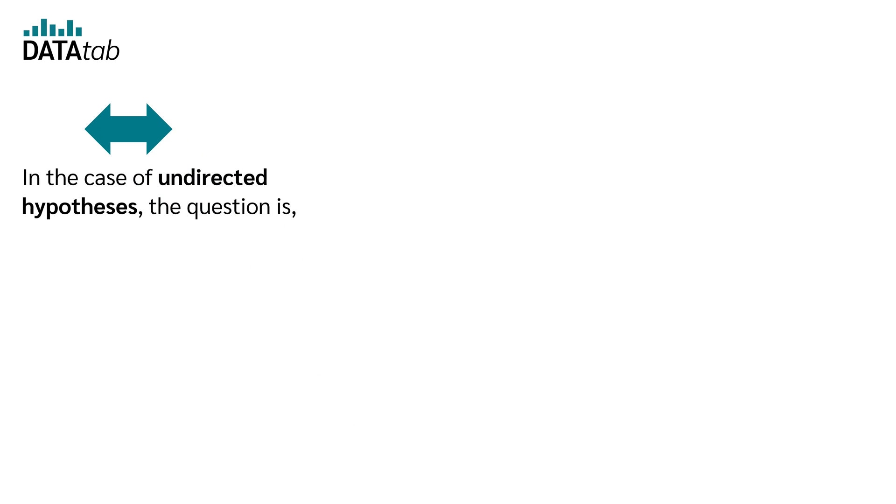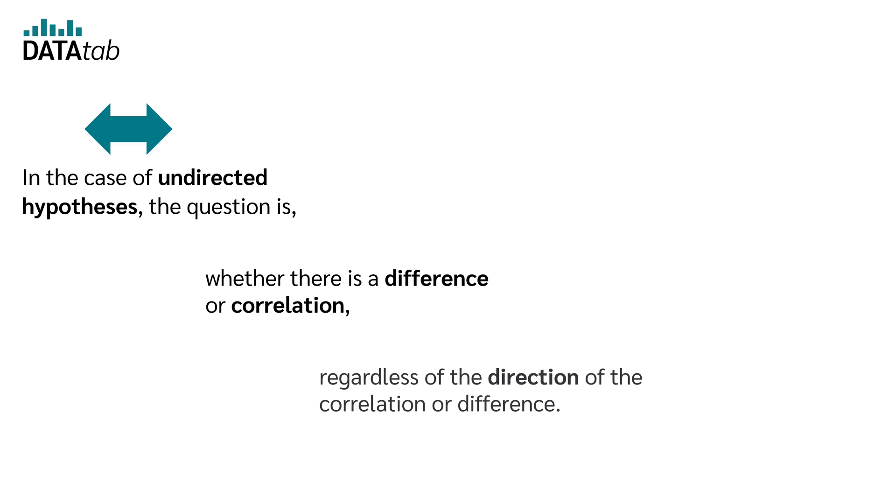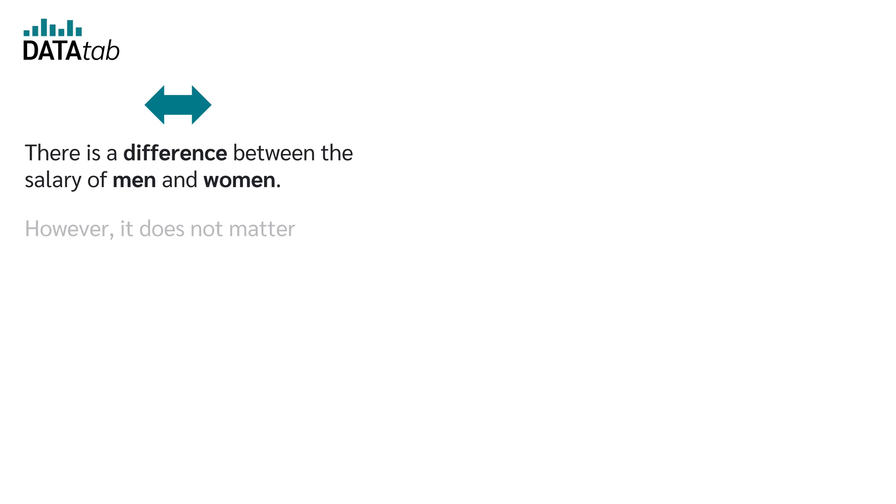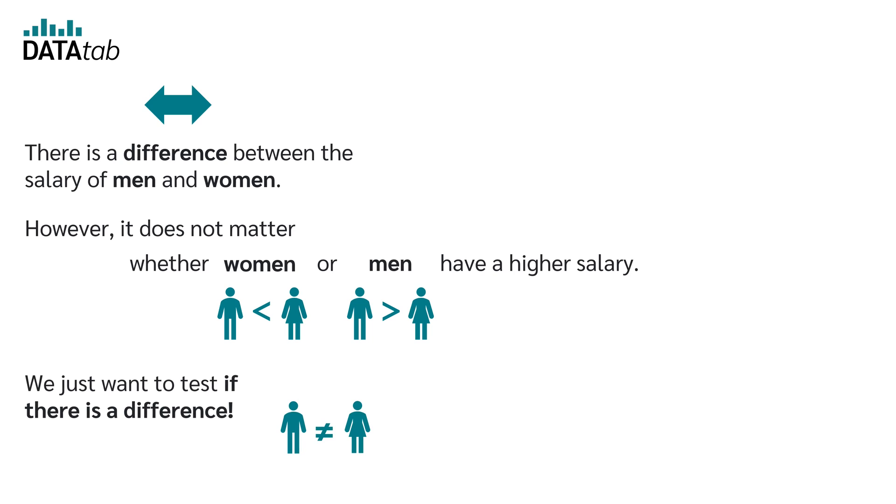In the case of undirected hypotheses, the question is whether there is a difference or correlation, regardless of the direction of the correlation or difference. Two examples. There is a difference between the salary of men and women. However, it does not matter whether women or men have a higher salary. We just want to test if there is a difference. We don't care about the direction of the difference.